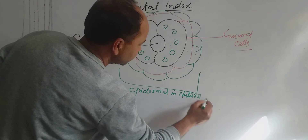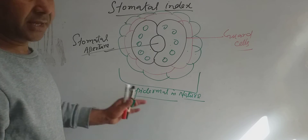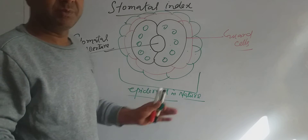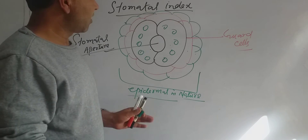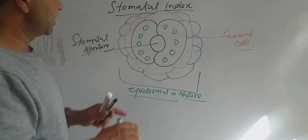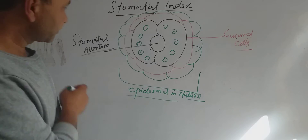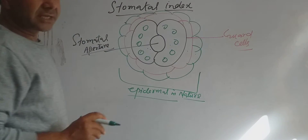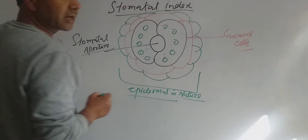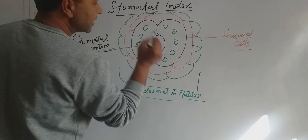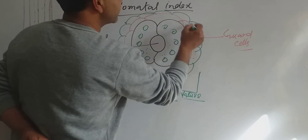If you observe stomata under a microscope, you will see a different number of stomata per unit area of the leaf surface. You will also observe that each stoma — that is each pair of guard cells — is surrounded by a definite number of epidermal cells.